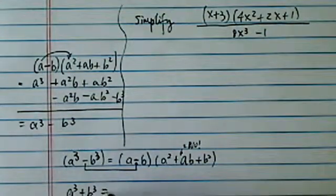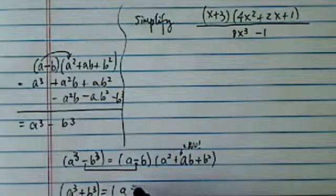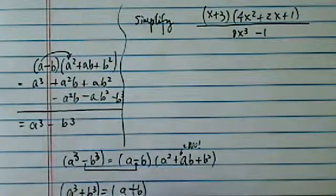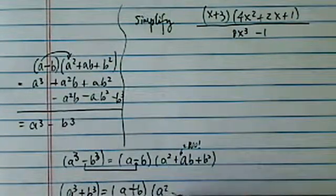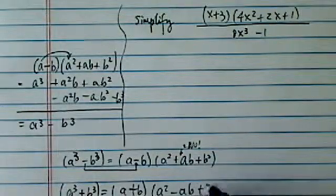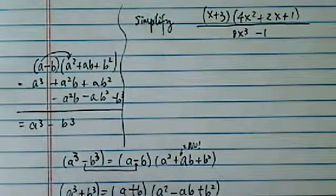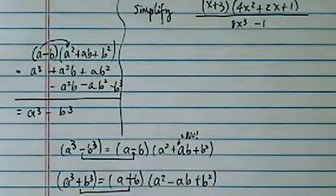And closely related, a cubed plus b cubed. Again, the first you want to follow the sign, and you do need a minus sign, and there's only one minus sign. That's for the a cubed plus b cubed, if you want to factor it.